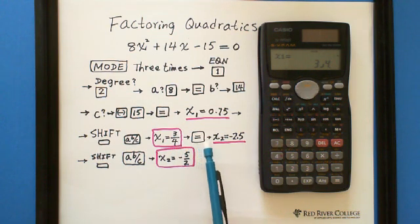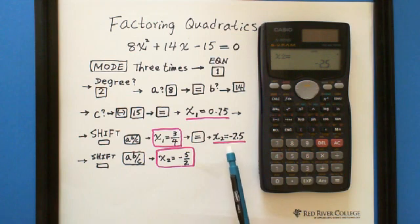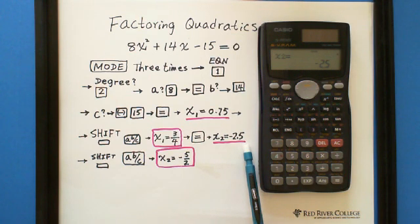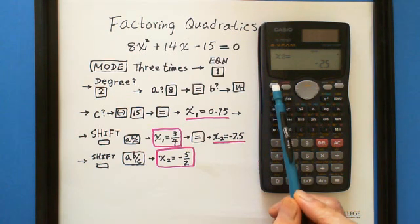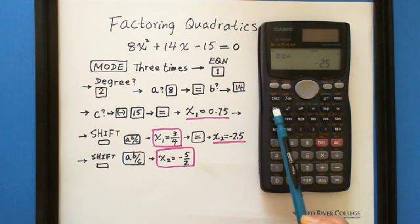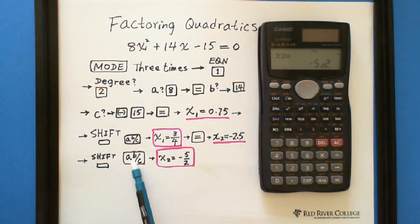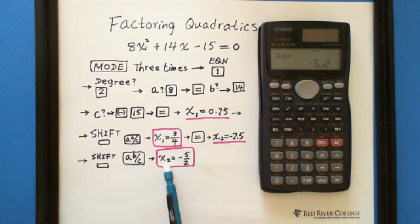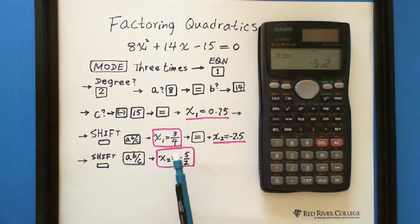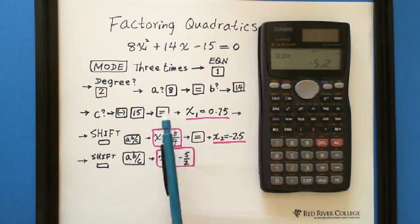Then we hit the equal sign again. It shows x2 equals negative 2.5. Convert to fraction using shift A, B, C. It gives you negative 5 over 2. After this step, you're done.